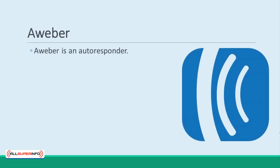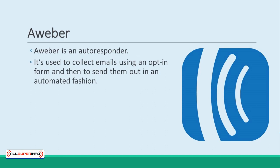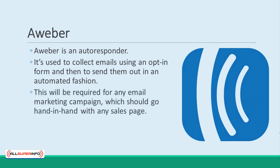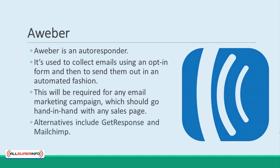AWeber. AWeber is an autoresponder, meaning that you can use it to collect emails using an opt-in form, and then send them out in an automated fashion. This will be required for any email marketing campaign, which should go hand-in-hand with any sales page. Other options include GetResponse and MailChimp, either of which will also offer all the basic features you need.